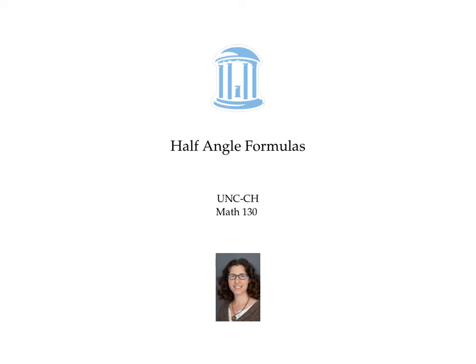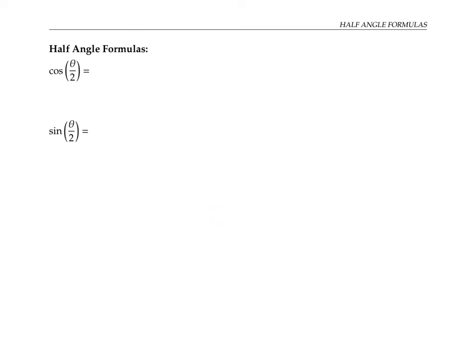This video is about the half angle formulas for computing cosine of theta over two and sine of theta over two. Cosine of theta over two is either plus or minus the square root of one plus cosine theta, all over two.